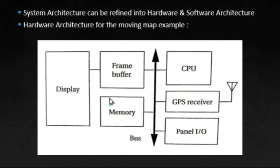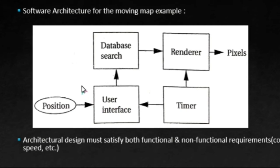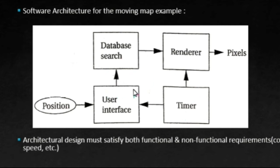Now let's see the software architecture. Looking at the software architecture, you can find similarity with the first figure — the system architecture. The only difference is the timer. This timer is used to control when we read the buttons on the user interface and render data onto the screen. Here we also get a better idea of the data flow — how data is going to flow among the software systems. So now we have seen the hardware architecture, software architecture, and the overall system architecture.